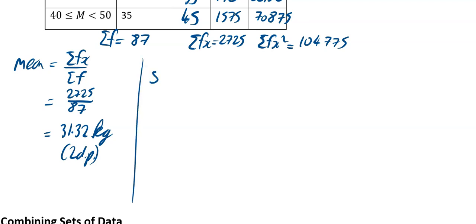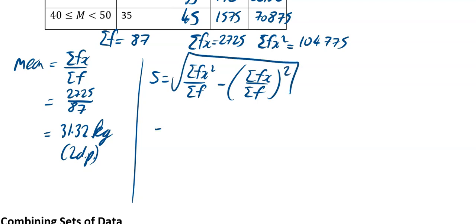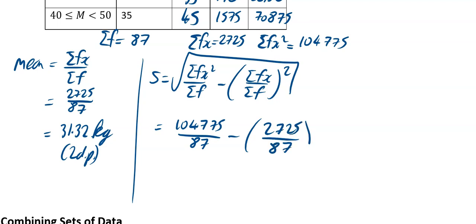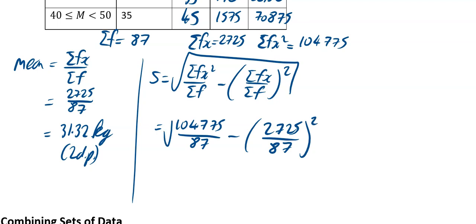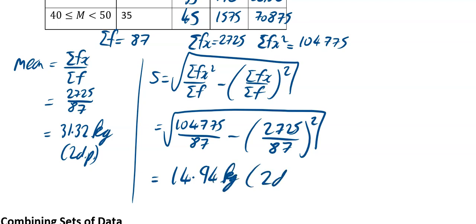For your standard deviation, just call it s. It is equal to the square root of sigma fx squared divided by sigma f, minus sigma fx divided by sigma f, and that is squared. You're using your square root button, fraction button, brackets, and squaring button on your calculator. It is really just a calculator exercise from here on in — make sure you're taking your time and correctly filling everything in. When I did that, I got 14.94 kilograms, to two decimal places.